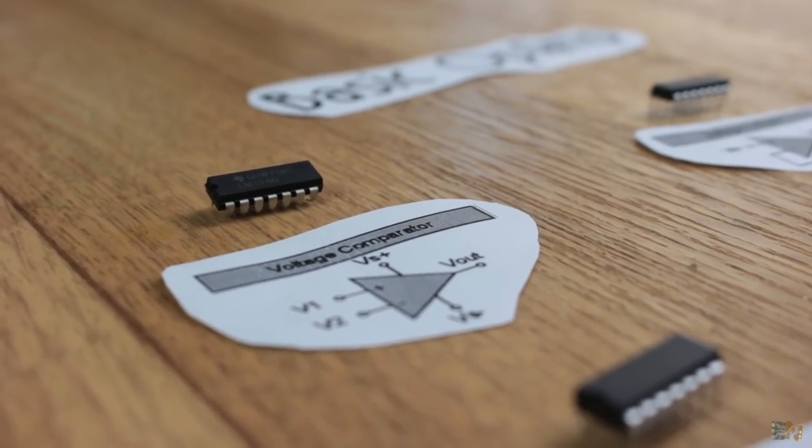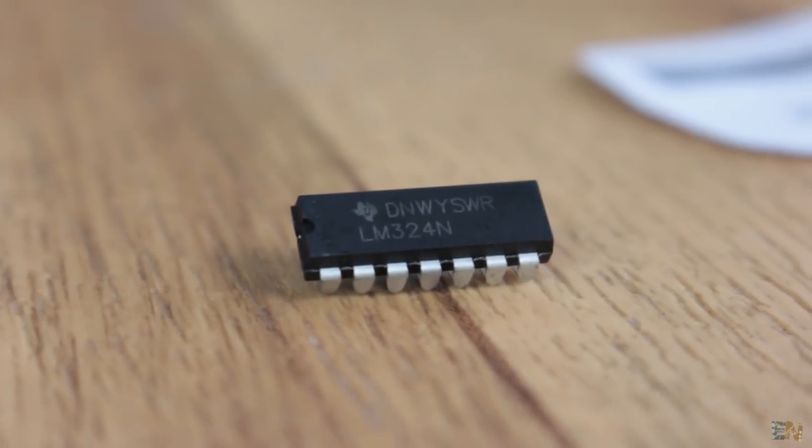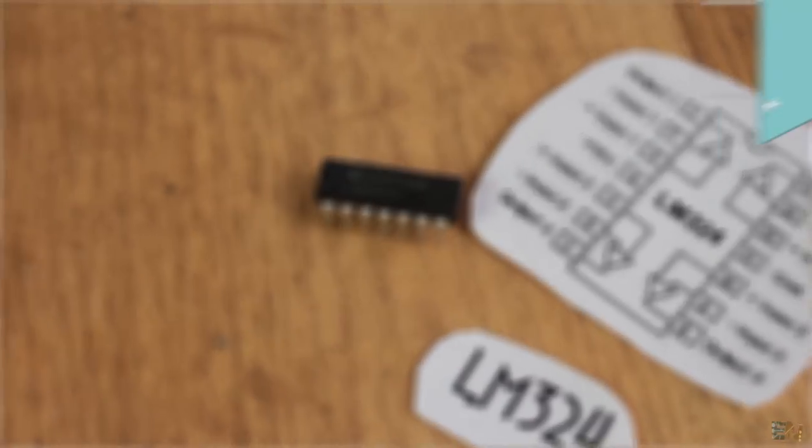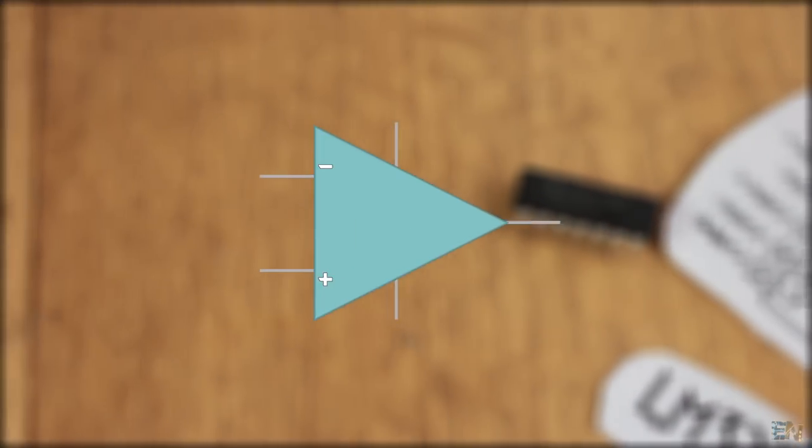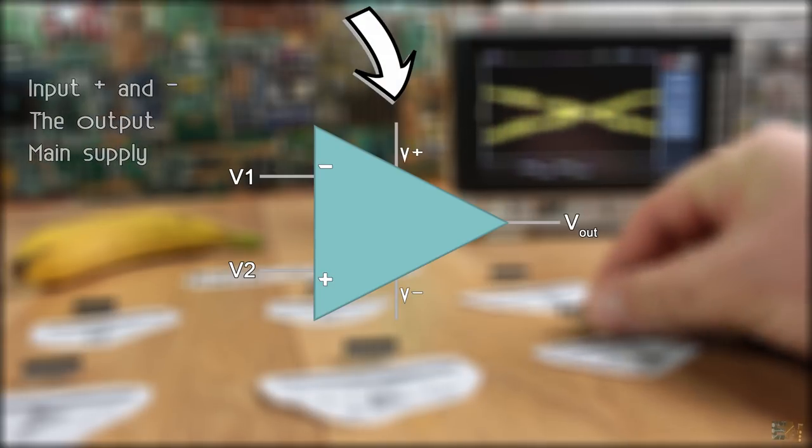But before that, this is an operational amplifier IC, the LM324. This is its pinout and this is the basic op-amp symbol, just a triangle with 5 pins. Those pins are called positive and negative input, the output and the positive and negative supply of the amplifier.